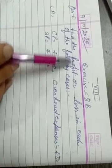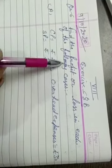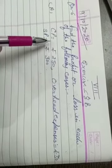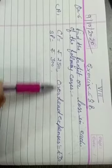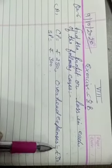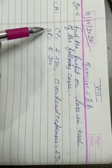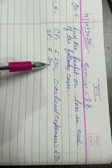Now question number 6. Find the profit or loss in each of the following cases. Cost price is equal to Rs. 250, overhead expenses is equal to Rs. 30, selling price is equal to Rs. 300.